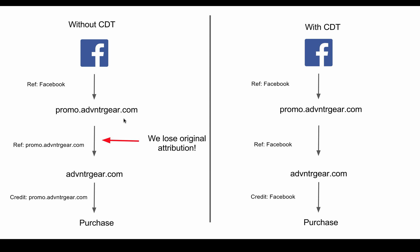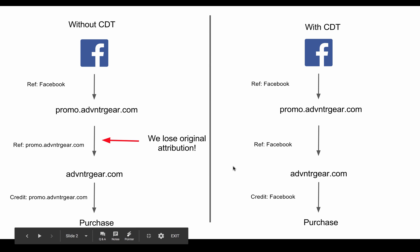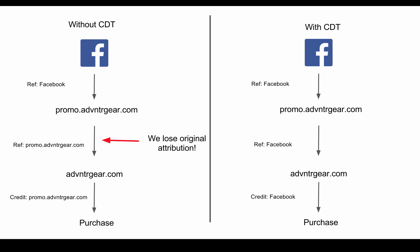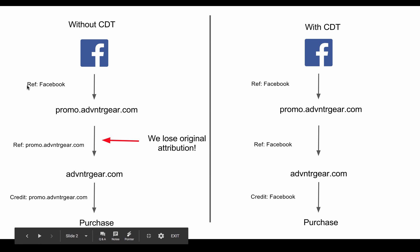Now if you're only sending one ad to the page that's fine, but if you're doing 10, 20, 30 ads — Facebook ads, Google ads, Twitter ads, Pinterest ads, all kinds of different things — it's going to get really, really confusing. So we lose the attribution right here in the handoff. And when we go down to the actual purchase at the very bottom, it's going to credit promo.adventuregear.com for the purchase — again, no sign of the original Facebook reference.